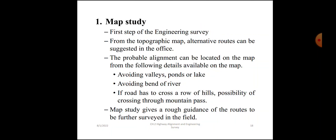Map study is the first step of engineering survey. From the topographic map, alignment routes can be suggested in the office. The probable alignment can be located on the map from the following details: avoiding valleys, ponds or lakes; avoiding bends in a river; if the road has to cross a row of hills, the possibility of crossing through a mountain pass. Map study gives rough guidance of routes to be further surveyed in the field.